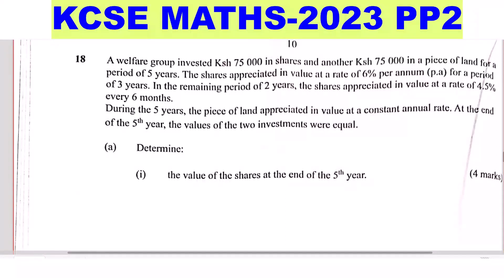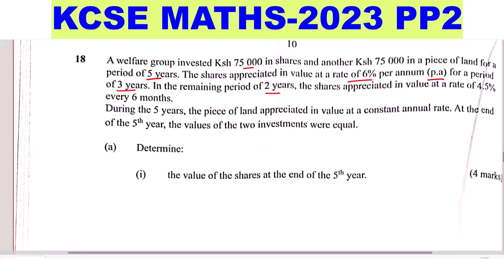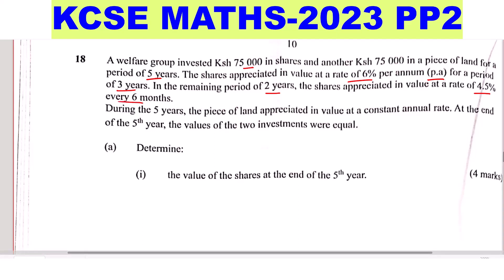Question 18. A welfare group invested 75,000 shillings in shares and another 75,000 shillings in a piece of land for a period of five years. The shares appreciated in value at the rate of 6% per annum for a period of three years. In the remaining two years, the shares appreciated in value at the rate of 4.5% every six months. During the five years, the piece of land appreciated in value at a constant annual rate. At the end of the fifth year, the values of the two investments are equal.